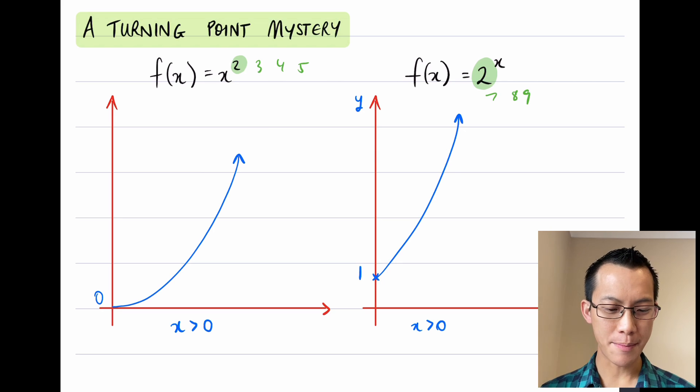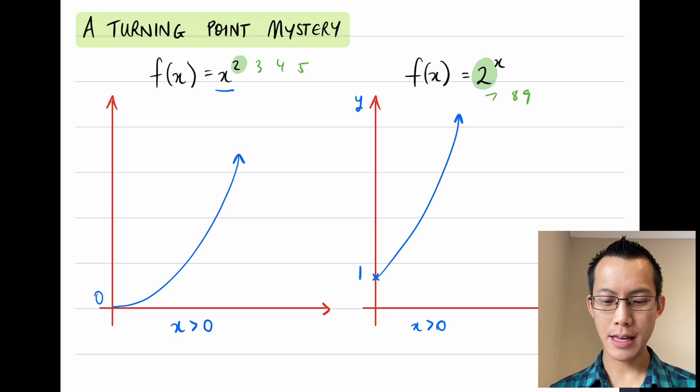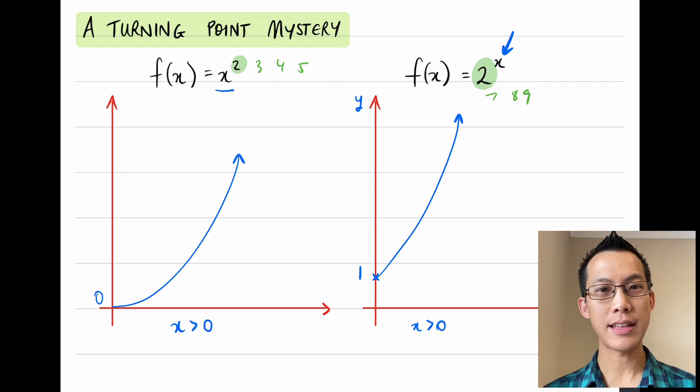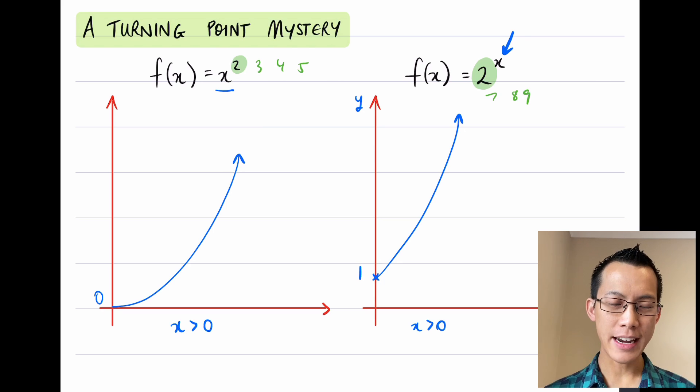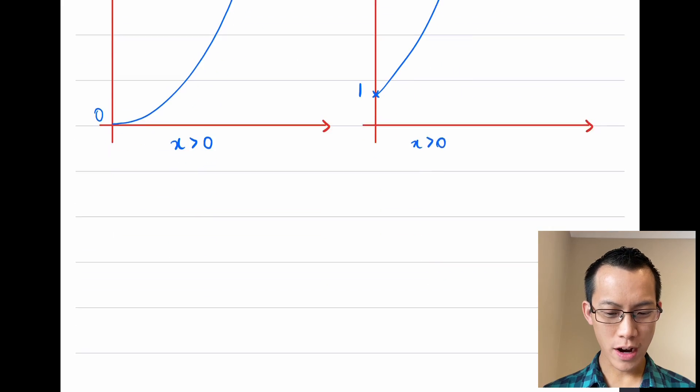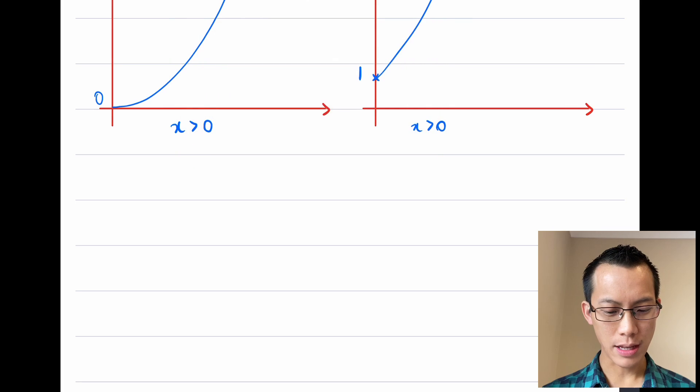This is what happens when the x is in the base, or where the x is in the exponent, in the index. What I'm really interested in, and where the mystery comes from, is when we try and combine these two. What if we had an x in the base and also in the index at the same time? What I'm trying to think about is a function that looks like f(x) = x^x.